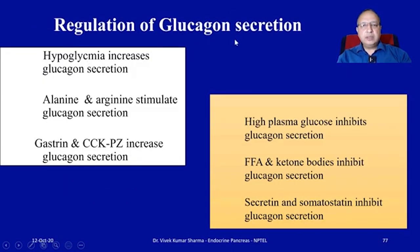Regarding regulation of glucagon secretion: hypoglycemia increases glucagon secretion, and amino acids such as alanine and arginine stimulate glucagon secretion. Gastrin and CCK-PZ also cause an increase in glucagon secretion. On the other hand, hyperglycemia inhibits glucagon secretion, as do increased free fatty acids, ketone bodies, secretin, and somatostatin.